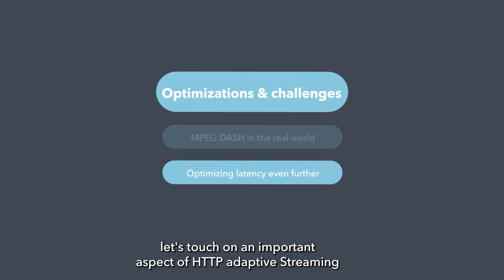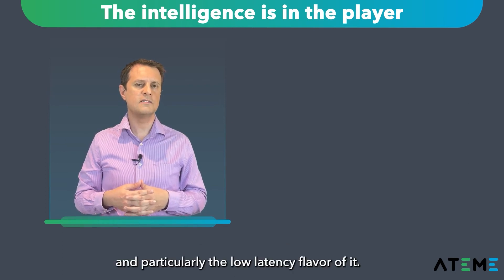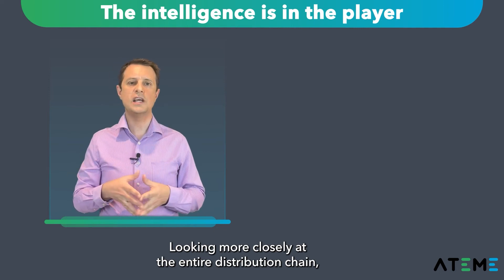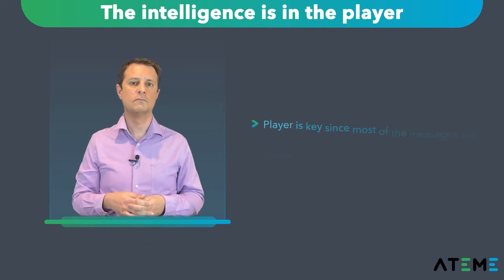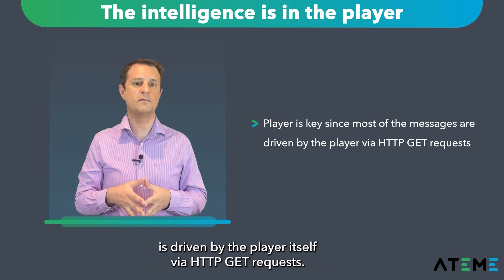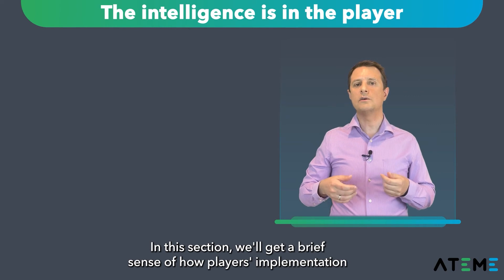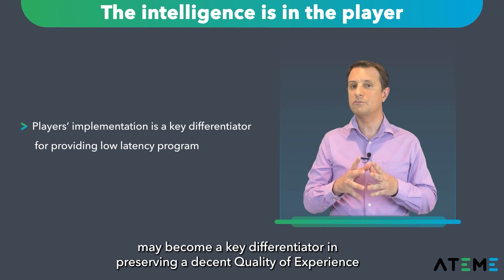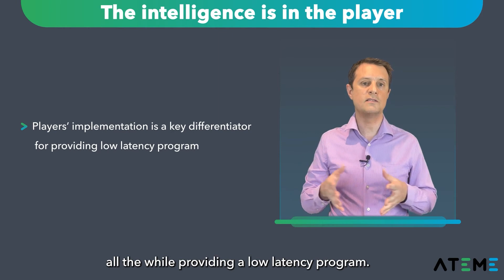To conclude this episode, let's touch on an important aspect of HTTP adaptive streaming, and particularly the low-latency flavor of it. Looking more closely at the entire distribution chain, we realize that the player is key in supplying the best latency to the viewer, considering that most of the orchestration is driven by the player itself via HTTP GET requests. We'll get a brief sense of how players' implementation may become a key differentiator in preserving a decent quality of experience, while providing a low-latency stream.